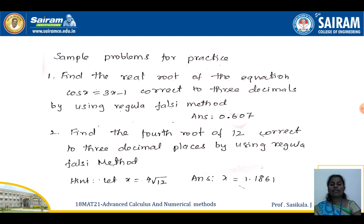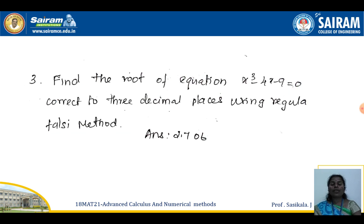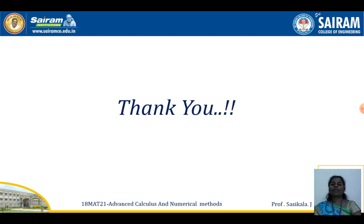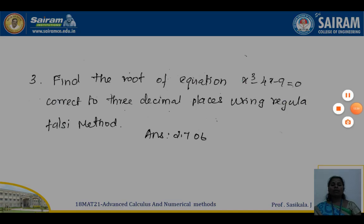Some practice questions are provided: (1) cos(x) − 3x + 1 = 0 (answer given); (2) find the fourth root of 12 — hint: let x⁴ = 12, so f(x) = x⁴ − 12 (answer given); (3) find the root of x³ − 4x − 9 = 0, correct to 3 decimal places. Please practice all three problems and verify your answers. Thank you — keep practicing!